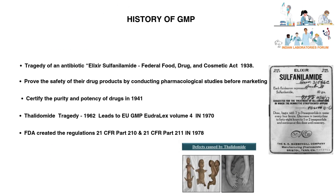History of GMP: In 1937, a tragedy involving the antibiotic elixir sulfanilamide killed more than a hundred people. The drug was solubilized using a high level of toxic raw material. This led to the enactment of the Federal Food, Drug, and Cosmetic Act in the year 1938. For the first time, companies were required to prove the safety of their drug products by conducting pharmacological studies before marketing.